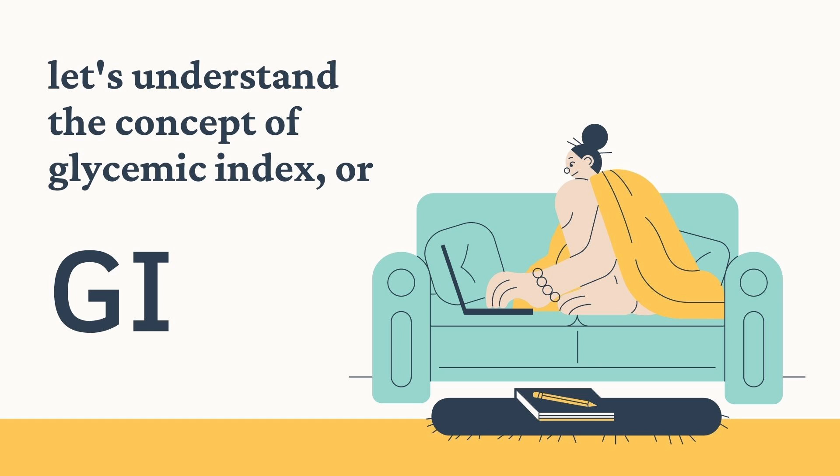Today I want to talk about GI, that is Glycemic Index. GI is important because if we know what GI is, it will help us plan our diet, which in turn can help us control three crucial things: first, blood sugar levels; second, weight gain; and third, cardiovascular diseases. These are all today's lifestyle diseases.